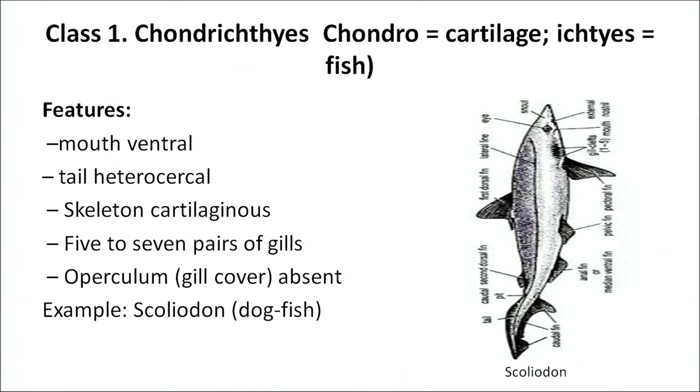Chondrichthyes — 'chondro' means cartilage and 'ichthyes' means fish — so these are cartilaginous fish. The mouth is ventral and the tail is heterocercal, meaning the upper lobe is larger than the lower one with the vertebral column extending into the upper lobe. Their skeleton is cartilaginous and they have five to seven pairs of gills. The operculum — the gill cover — is absent. Example: dogfish or Squalus.